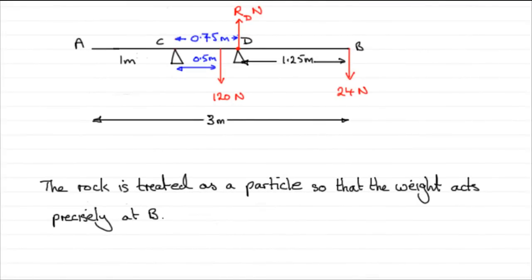Now in this last part, the rock is treated as a particle so that the weight acts precisely at B. We've had to treat it as a particle because imagine if you've got a rock at B, then there could well be a lot of that edge acting along the rod AB. So we're not sure exactly where the weight would act.